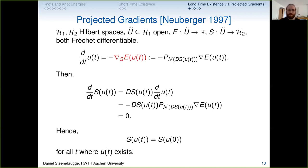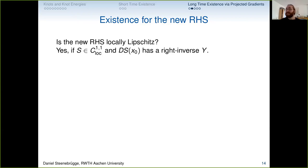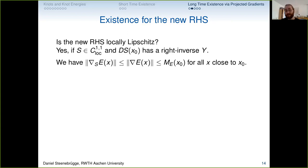The key property: plugging u(t) into the constraint S and differentiating by the chain rule gives DS(u(t)) applied to something in the null space of DS(u(t)), which is zero. So assuming sufficient smoothness, the constraint is preserved for all times of existence. We now choose a constraint that preserves our parametrization — for instance, starting with an arc-length parametrization. The issue is that we now have a new right-hand side and must show it still satisfies the conditions needed for Picard–Lindelöf.